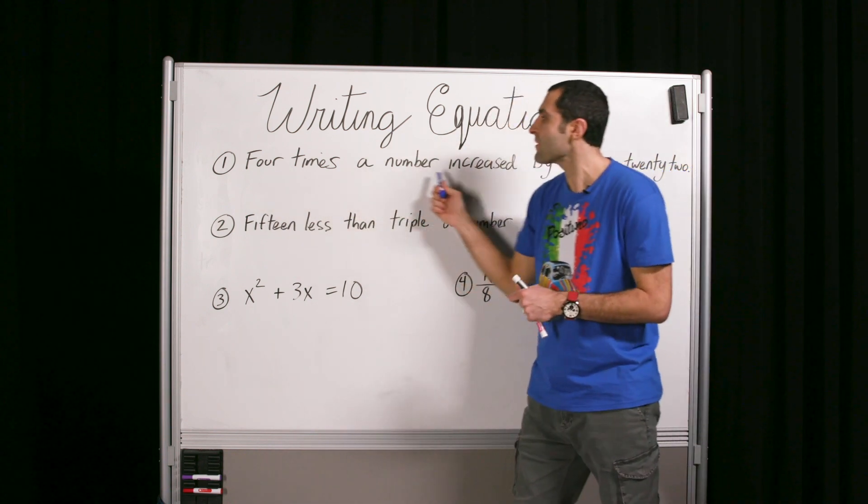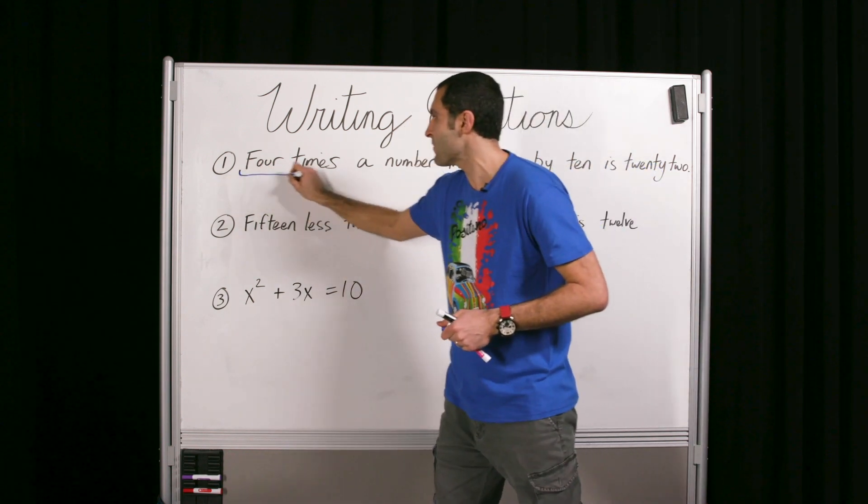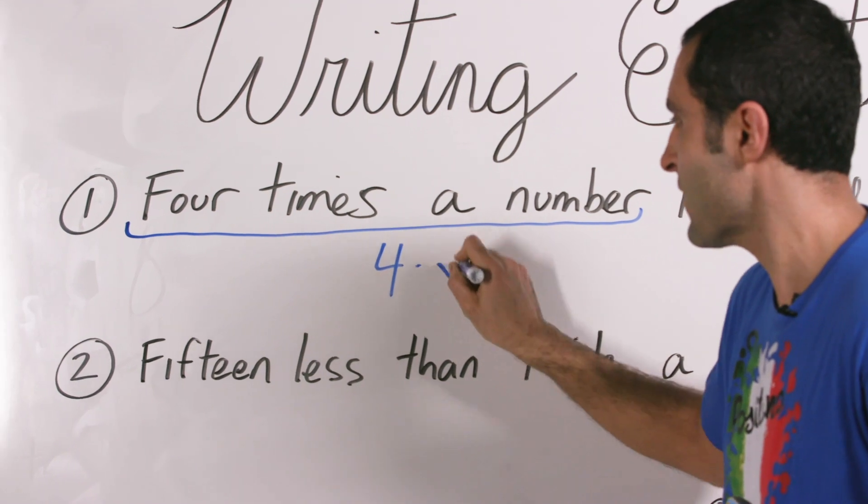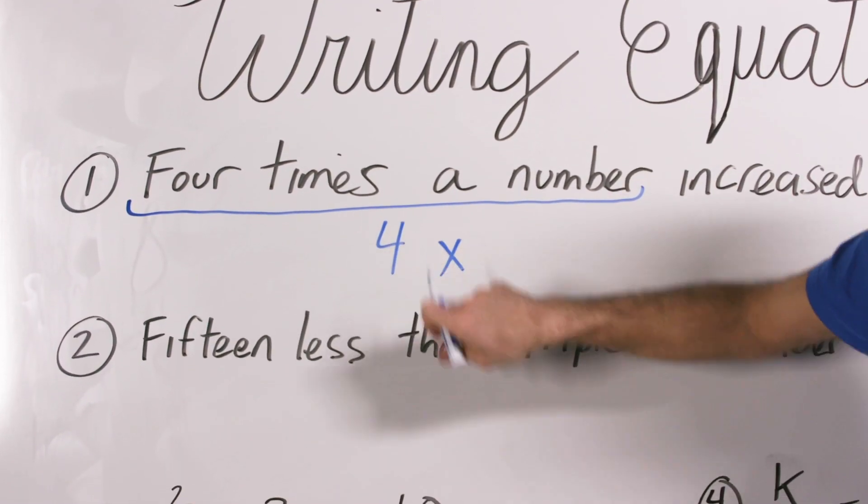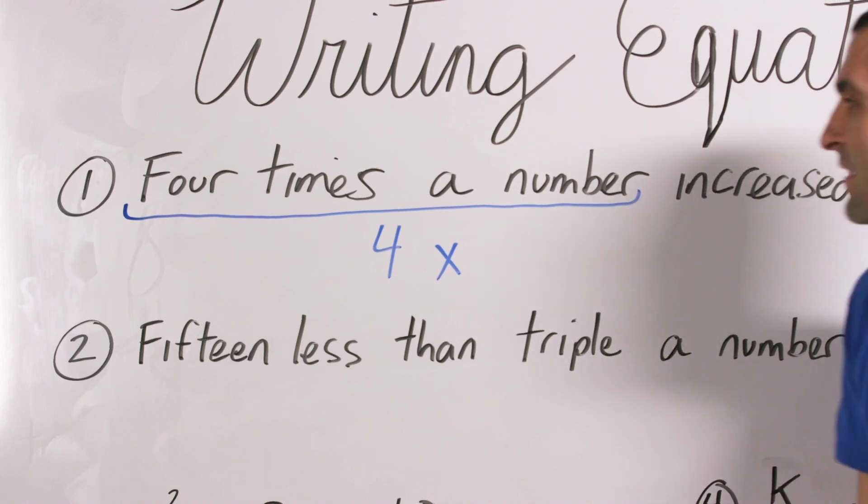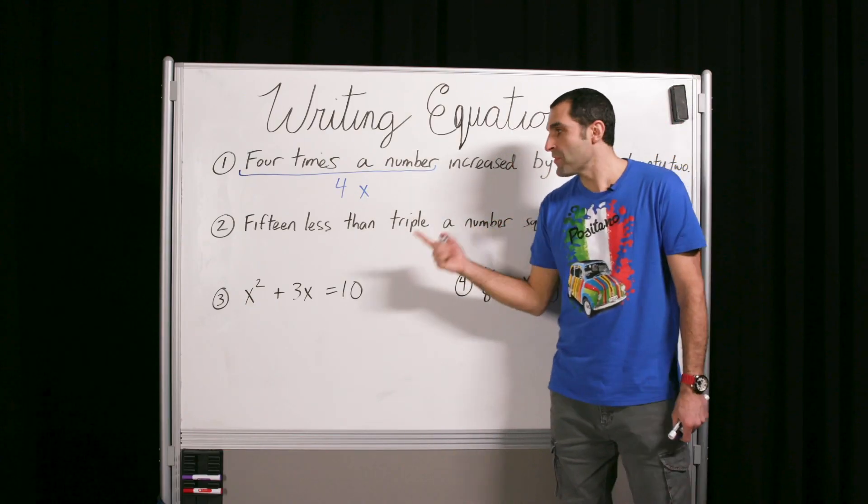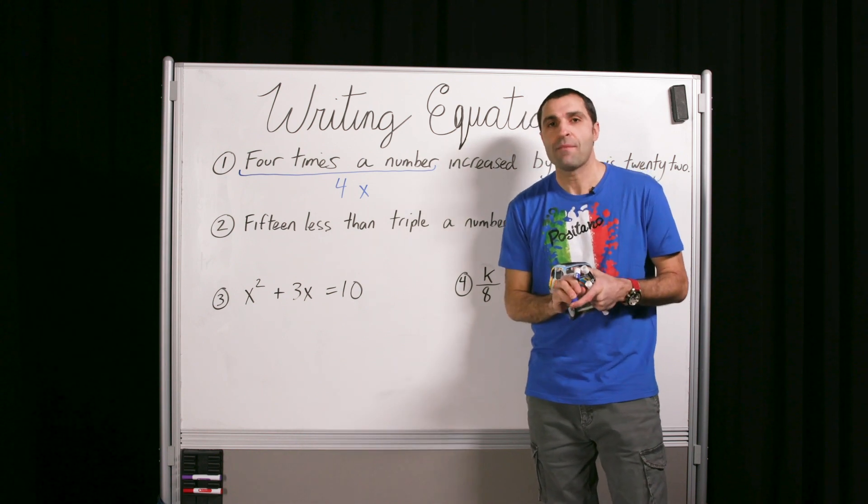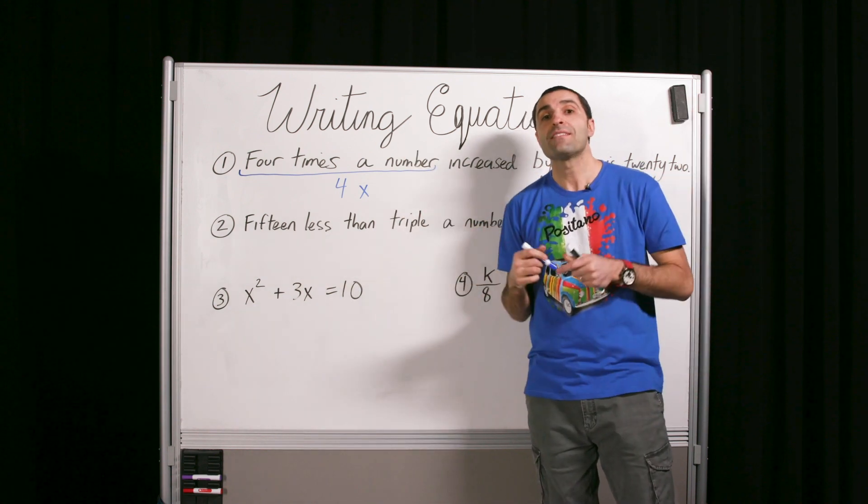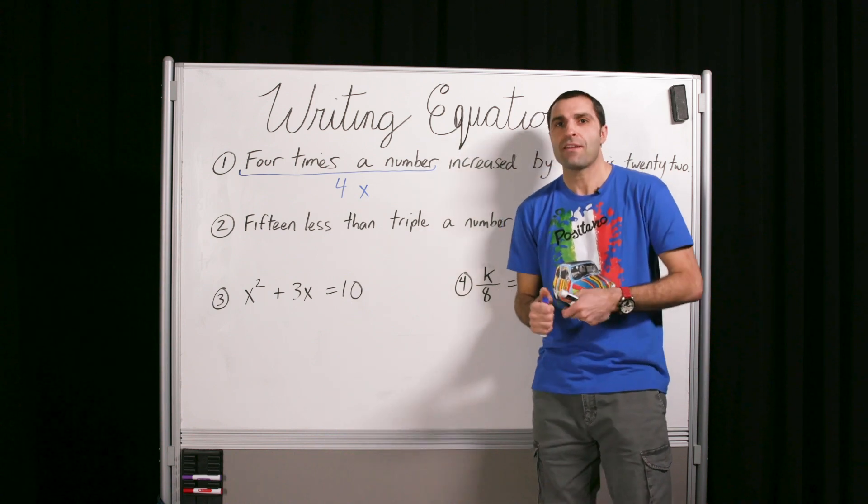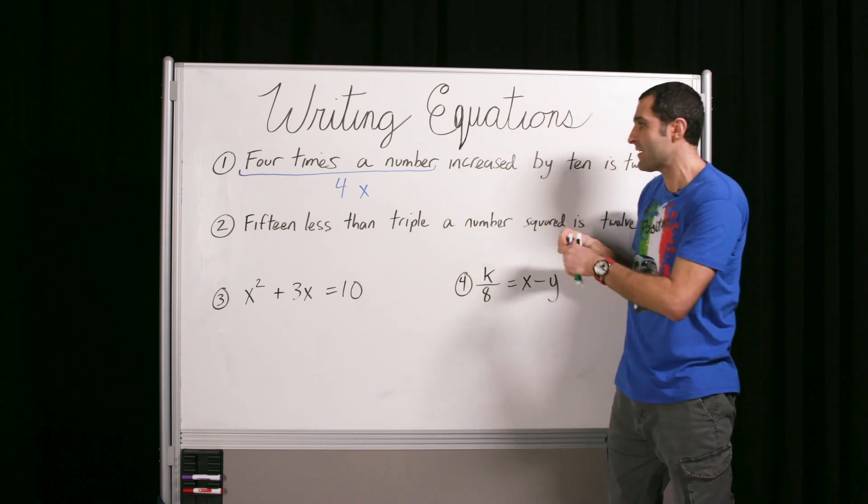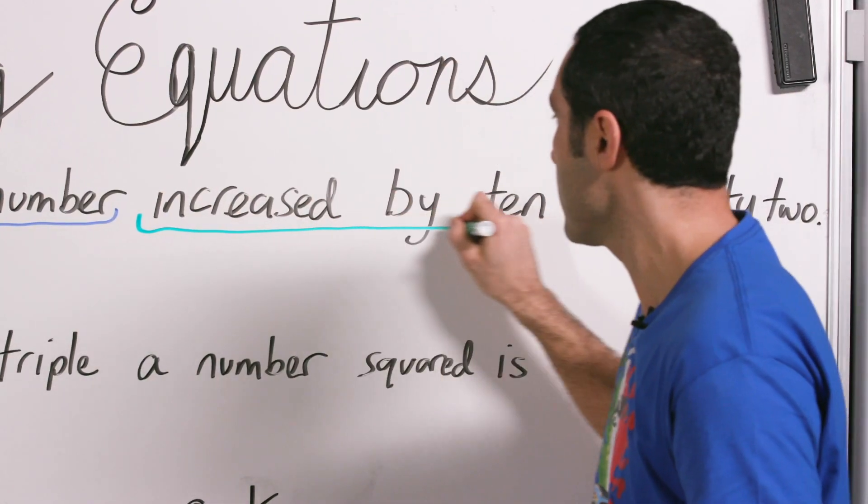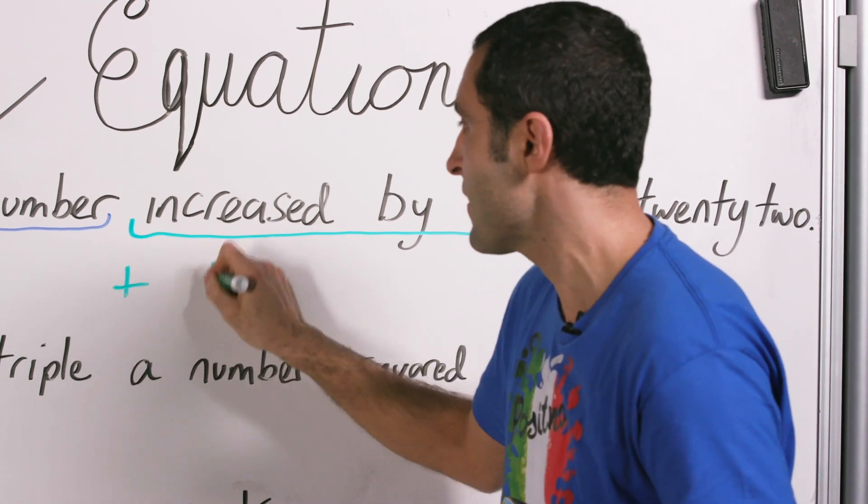Four times a number, you can say in this little part, would be four times x. And in a sense we don't need the dot, so we have 4x. Increased by - when you say the temperature increased by something, we know that it went up with addition. It increased by 10 or increased by, oh, there it is. Increased by 10, we could put that down, would be an addition of 10. So we could say plus 10.